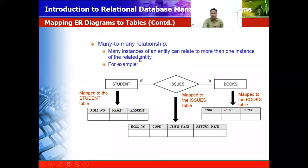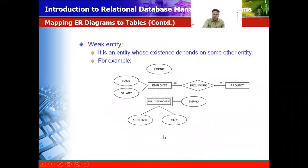Many-to-many: many instances for an entity can create more than one instance. When many students register for many books, it is a many-to-many relationship.